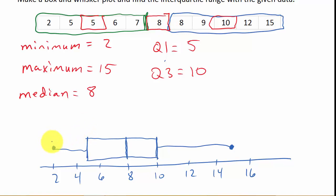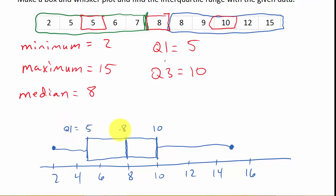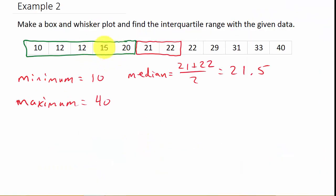A lot of times what you can do is label the first, second, and third quartile values directly on the plot — so Q1 = 5, Q2 = 8, Q3 = 10. You could label them as Q1, Q2, Q3 equals. Now let's take a look at the next example.